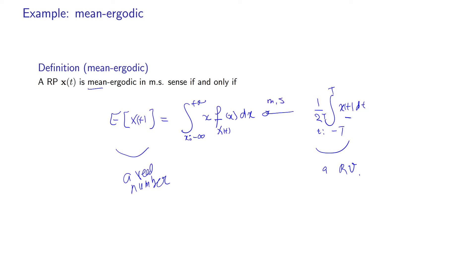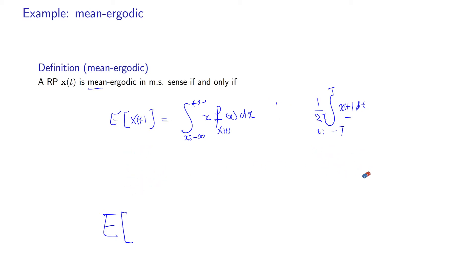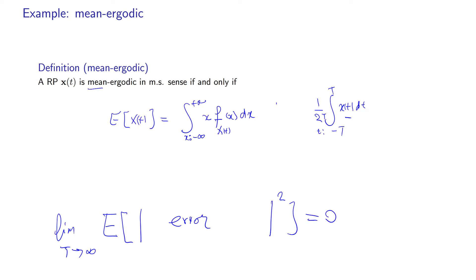Convergence in mean square sense has two components: 'mean' refers to taking the expected value, and 'square sense' means you calculate the error between the statistical value and the temporal value and then square it. If the mean square error converges to zero — meaning when T is large enough the error becomes as small as you want — then the process satisfies this convergence definition.